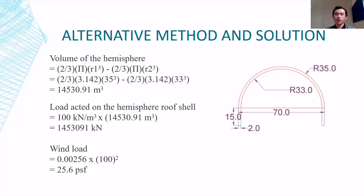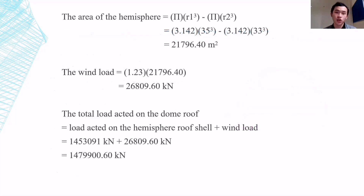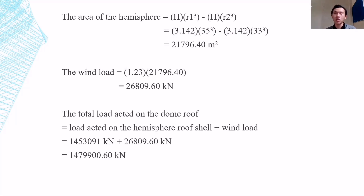After we know the normal load, we calculate the wind load. The formula is 0.00256 times the wind speed in miles per hour squared. Assuming wind speed is 100 mph, we get the wind load as 25.6 PSF. Converting: 1 PSF equals 0.0479 kN/m², giving 1.23 kN/m². The area of the hemisphere using formula 2πR² gives 2.1 × 10⁴ m². So the wind load is 2.6 × 10⁴ kN, and the total load is 1.4 × 10⁶ kN.